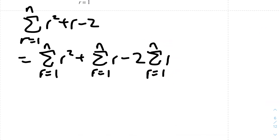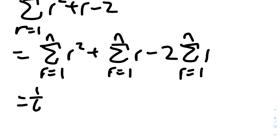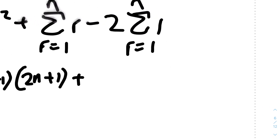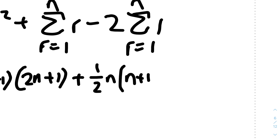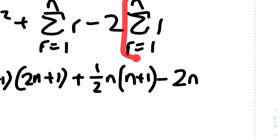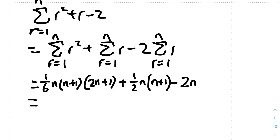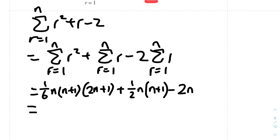We know the sum of r squared equals one-sixth n(n+1)(2n+1), the sum of r equals half n(n+1), and 2 times the sum of 1 equals 2n. Looking at what we need — one-third n at the front — we should factorize one-sixth n out. One-sixth divided by one-sixth gives 1, and one-half divided by one-sixth gives 3.